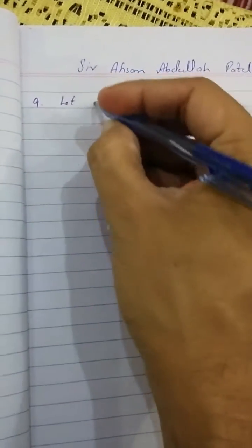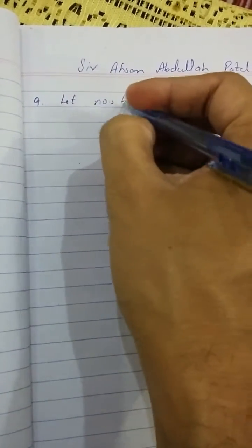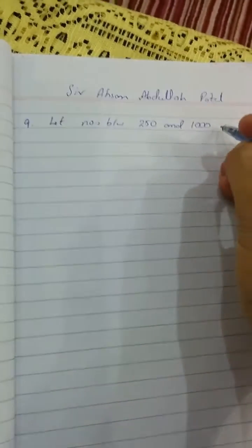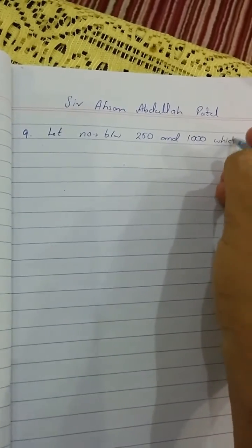First, what will we do? Let the numbers between 250 and 1000 which are divisible by 7...